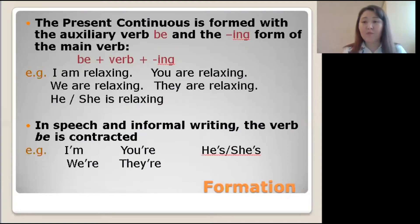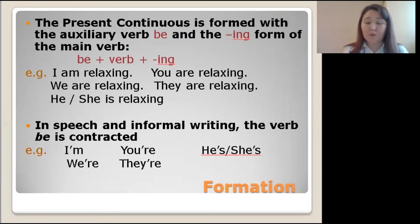Let's look at the formation of the Present Continuous. The Present Continuous is formed with the auxiliary verb 'be' and the -ing form of the main verb. So: be + verb + -ing.